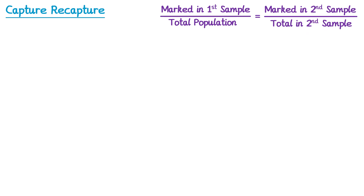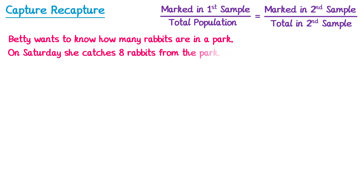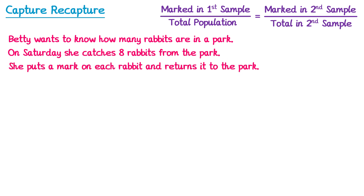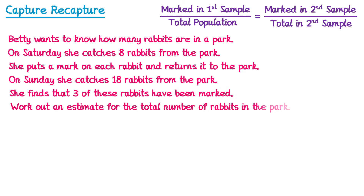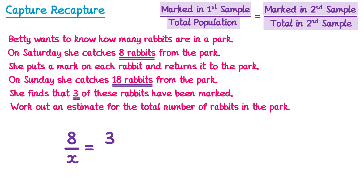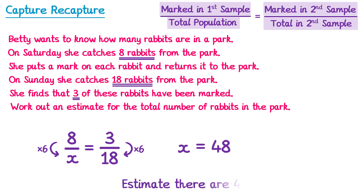Let's use this formula to answer an exam-style question. Betty wants to know how many rabbits there are in a park. On Saturday she catches 8 rabbits, marks each one, and returns them. On Sunday she catches 18 rabbits and finds that 3 have been marked. Using the formula: 8 over x equals 3 over 18. To get from 3 to 18 we multiply by 6, so we multiply 8 by 6 to get x equals 48. We estimate there are 48 rabbits in the park.